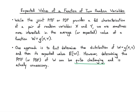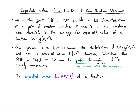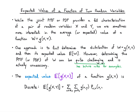We can just skip this step entirely. What we can do instead is directly compute the average of w using the joint PMF or PDF. The expected value of a function g of x, y in the discrete case is just the sum of that function weighted by the joint PMF, summed up over all values in the range — just the weighted average of that function with respect to the joint PMF.